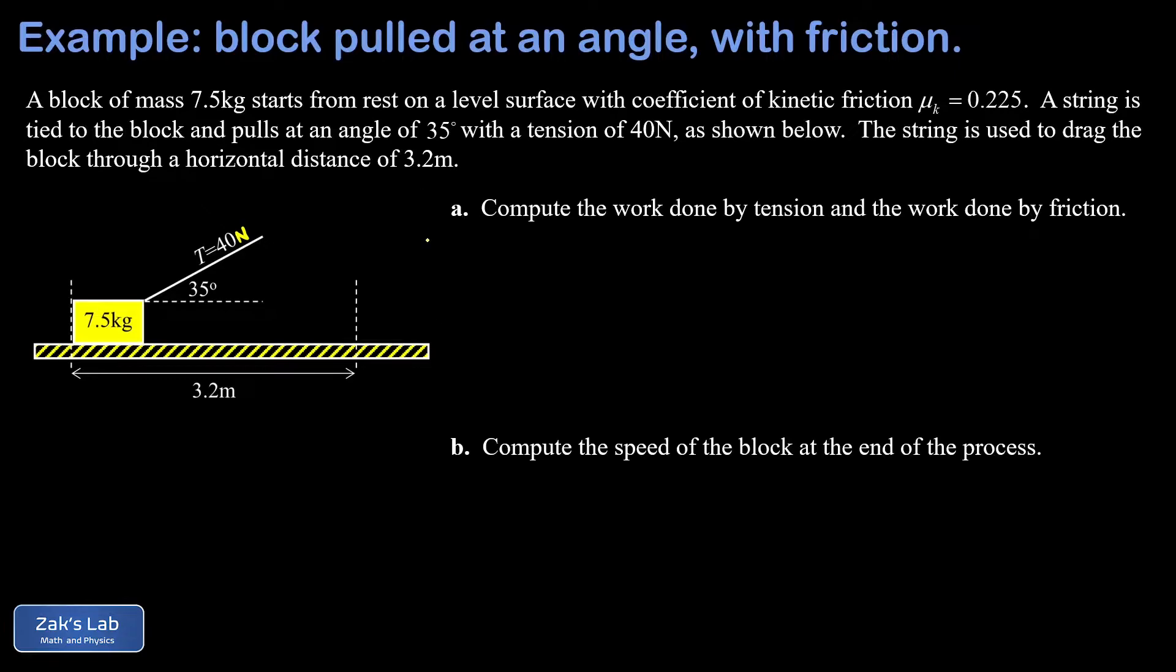In part A we're asked for the work done by the tension and the work done by the friction. In part B we apply the work energy theorem and compute the final speed of the block after it's been dragged through a distance of 3.2 meters.